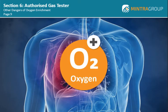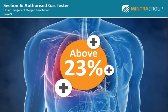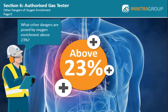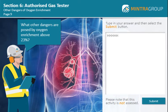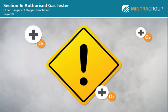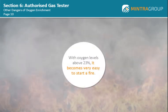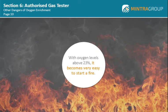We have seen the effects that oxygen enrichment can have on the human body, but there is also another serious danger when an atmosphere becomes enriched with oxygen above a level of 23%. Can you think of other dangers that an oxygen enriched environment might create? Even a small increase in the oxygen level in the air above 23% can create a very dangerous situation. With oxygen levels above 23%, it becomes very easy to start a fire. The fire will then burn hotter and more fiercely than in air with lower oxygen levels and may become almost impossible to extinguish.